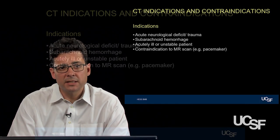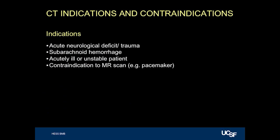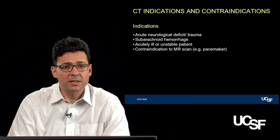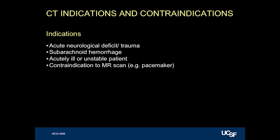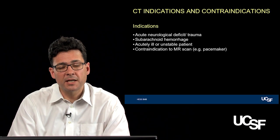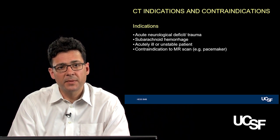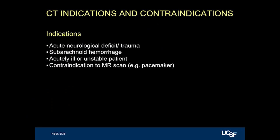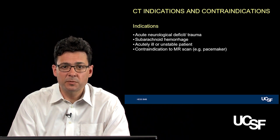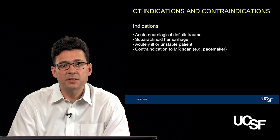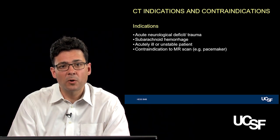CT is almost always the first modality used in the emergency room when patients present with acute neurologic deficits or trauma, because it can be obtained rapidly and can guide management in patients who are often unstable. An example would be subarachnoid hemorrhage — when an aneurysm bursts, you have to move quickly, obtain a CT, find the aneurysm, and manage the patient. CT is also preferred in certain patients who can't have an MRI, such as those with pacemakers, although some patients with pacemakers can now have MRI.